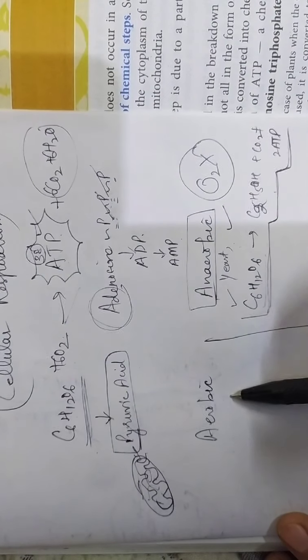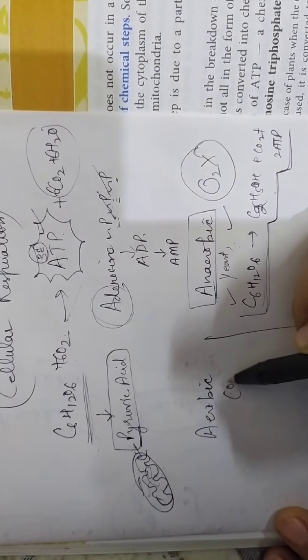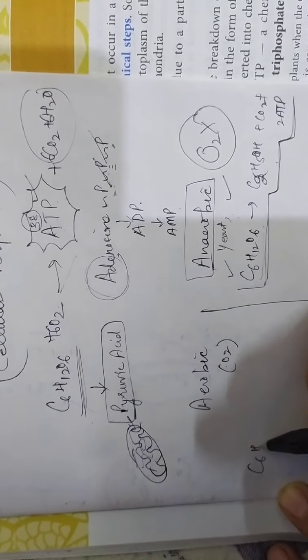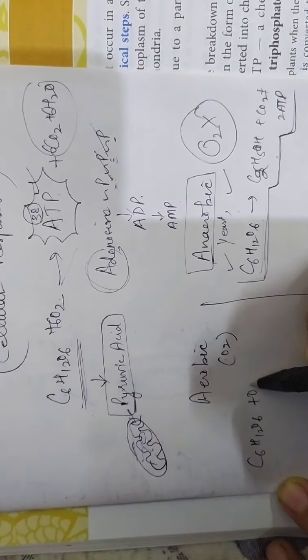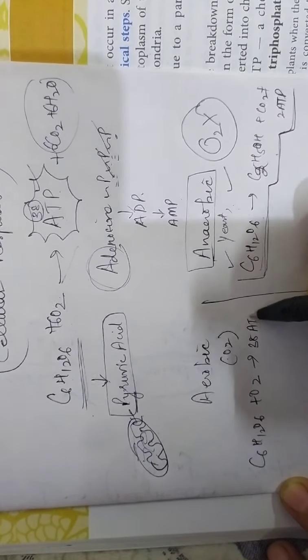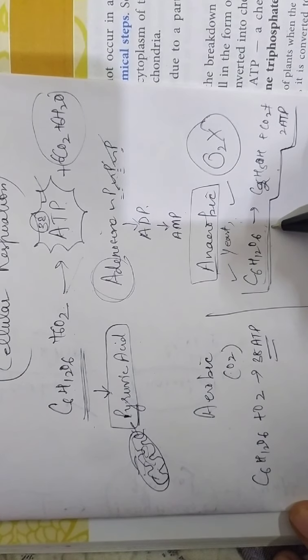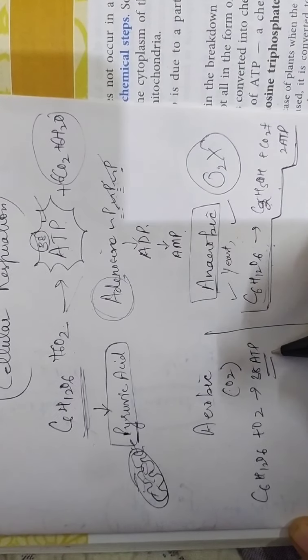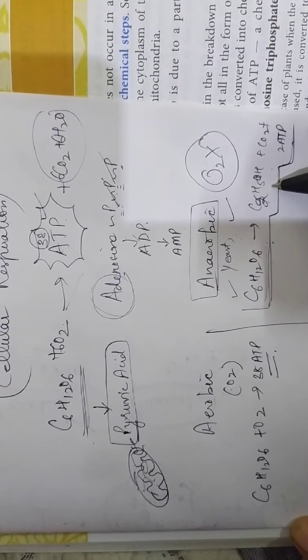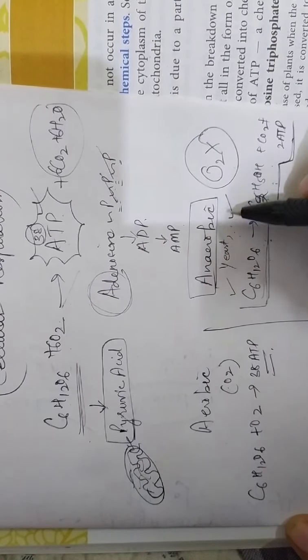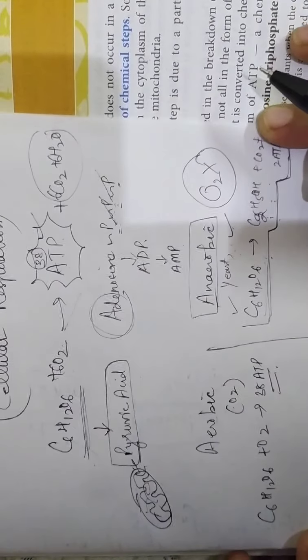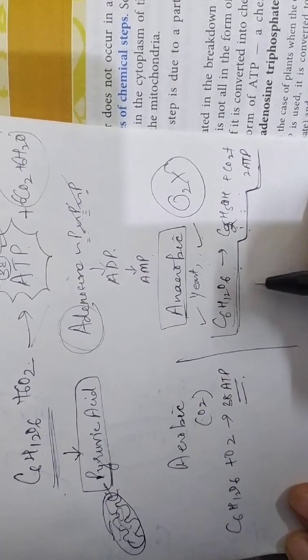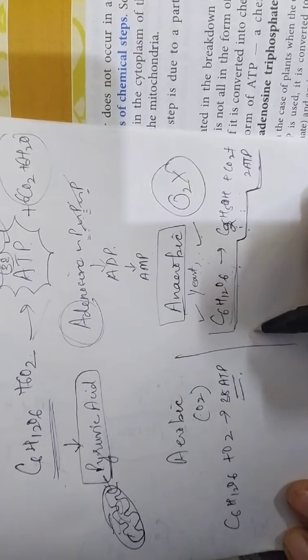So if it is aerobic respiration, it is taking place with oxygen. So here with oxygen, ultimately C6H12O6, that is glucose, will be forming 38 ATPs. And here, glucose without oxygen will produce only two molecules of ATP. The byproducts here are water and carbon dioxide. Here carbon dioxide and ethyl alcohol. This is in yeast, bacteria, fungi and plants. In case of animals, in human beings, for a short period, anaerobic respiration can occur in muscle cells.